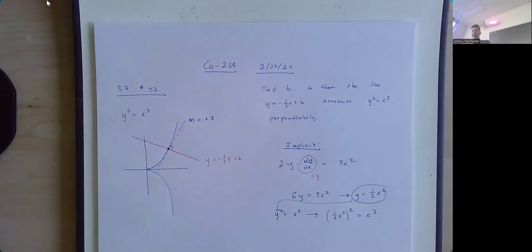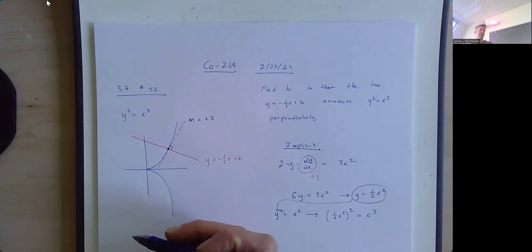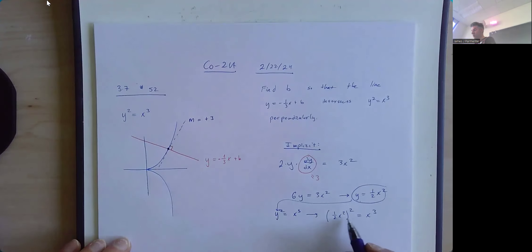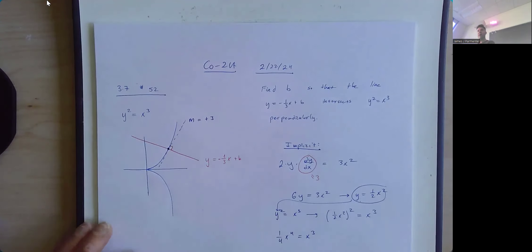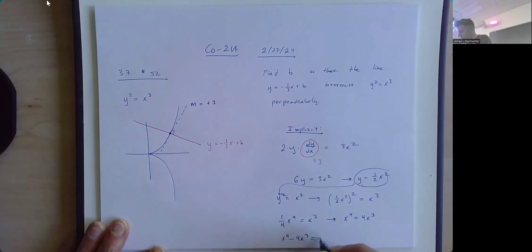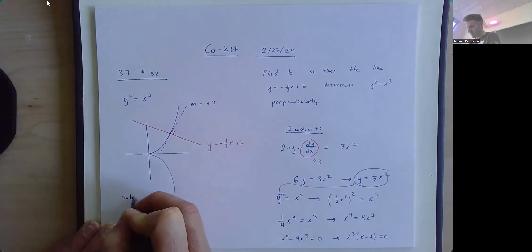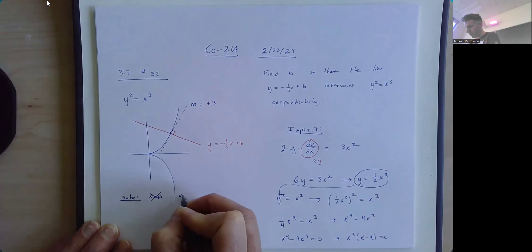One solution is x equal to 0, but we can see from the picture that's not the right one. Multiplying out: 1/4 x to the fourth equals x cubed. Multiply both sides by 4: x to the fourth equals 4x cubed. Bring to the left: x to the fourth minus 4x cubed equals 0. Factor out x cubed: x cubed times (x minus 4) equals 0. So solutions are x equal to 0 or x equal to 4.